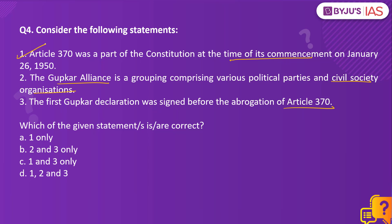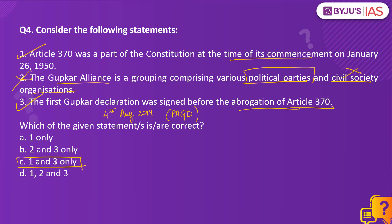Statement 2 is incorrect, because the Gupkar Alliance is a grouping comprising various political parties alone and not civil society organizations. On 4th August 2019 — a day before the central government announced the abrogation of Article 370 — political parties in Kashmir, except BJP, met and formed the People's Alliance for Gupkar Declaration, and on the same day the first Gupkar Declaration was signed. Therefore, Statement 3 is also correct, because the first Gupkar Declaration was signed before the abrogation of Article 370. The correct answer is option C: 1 and 3 only.